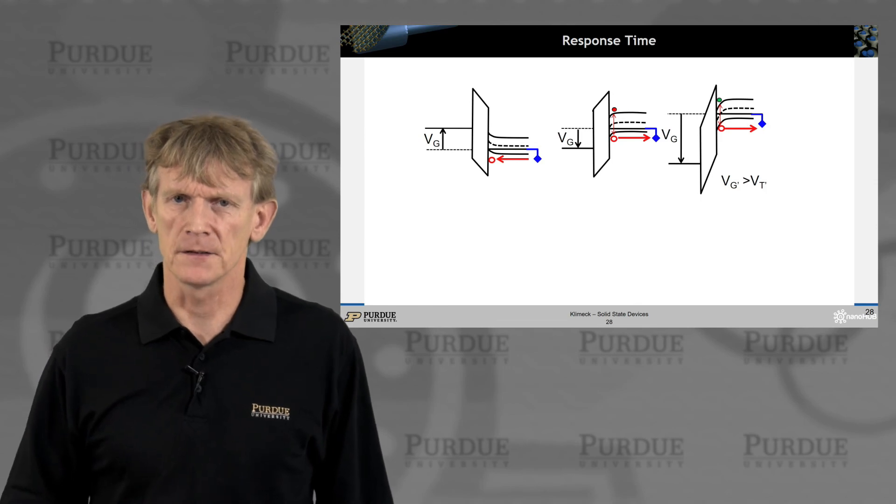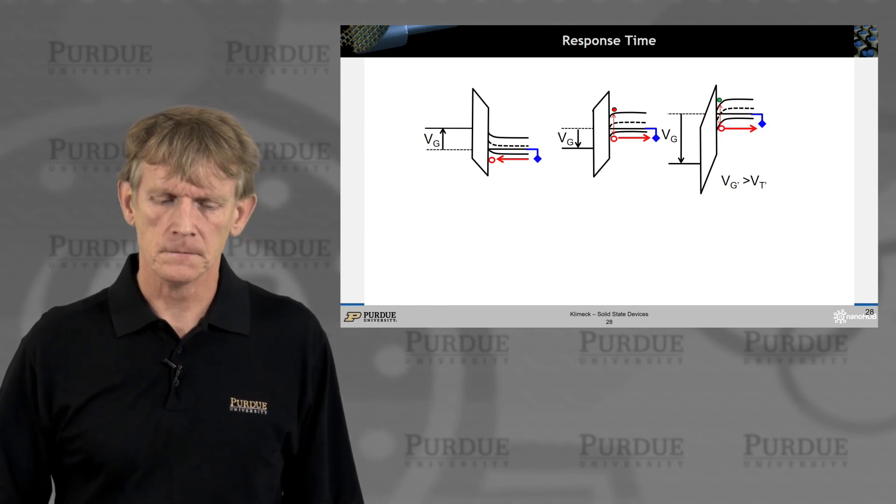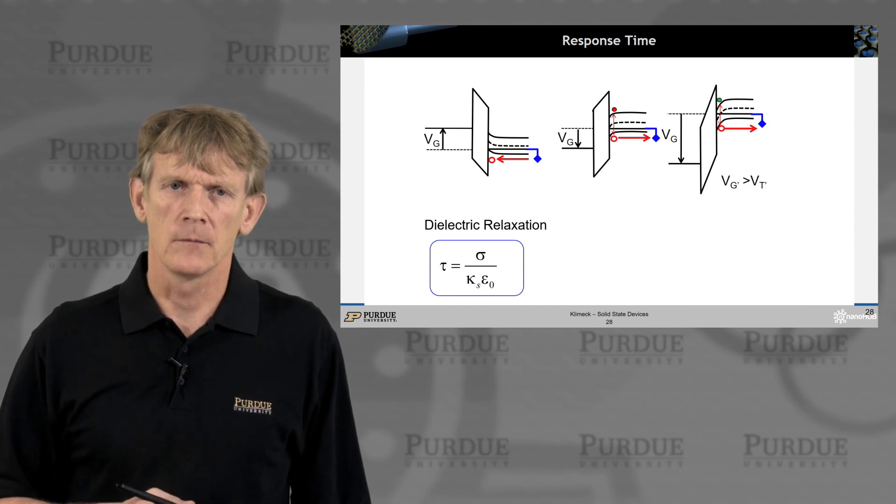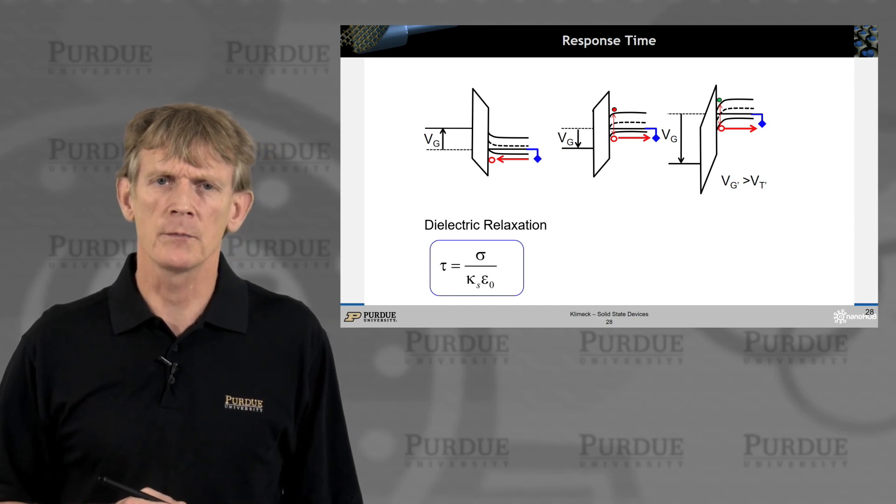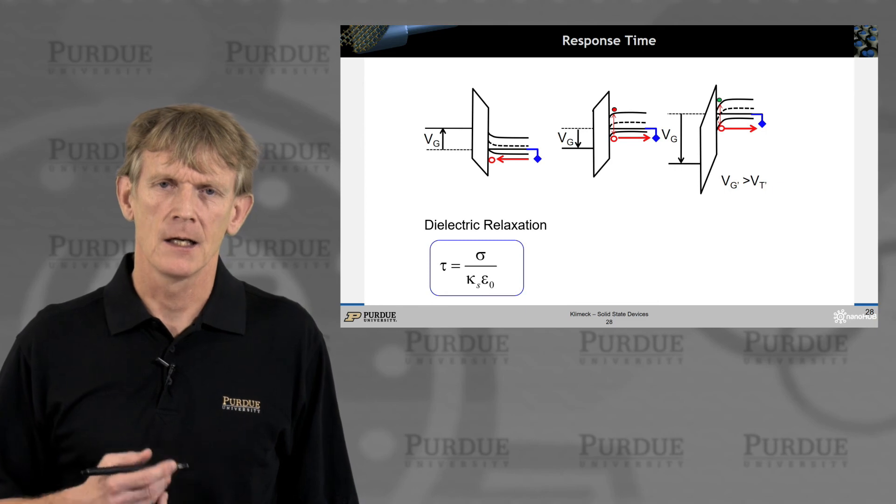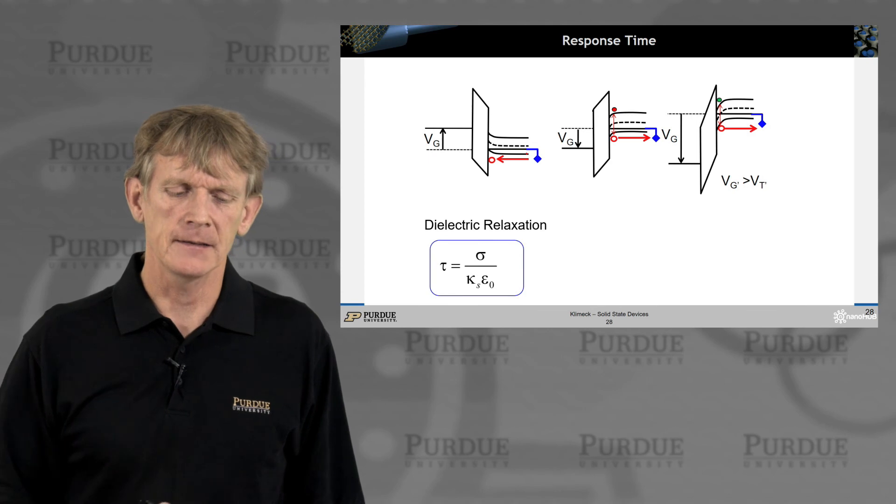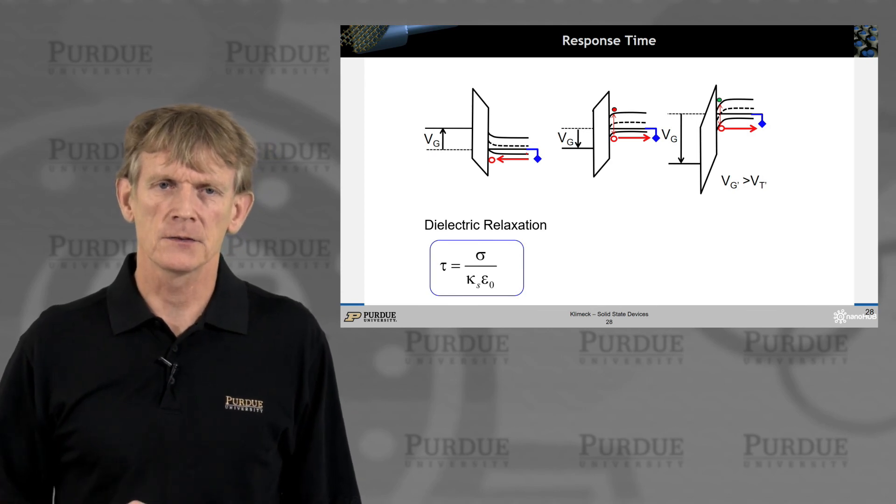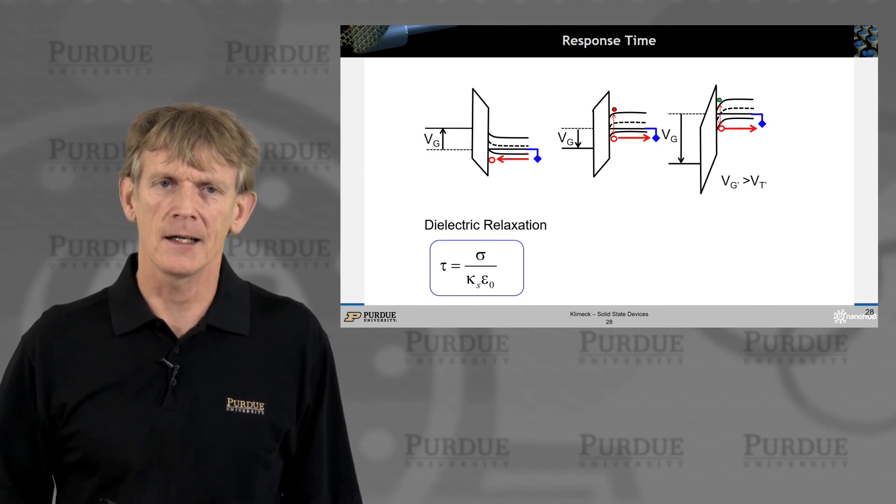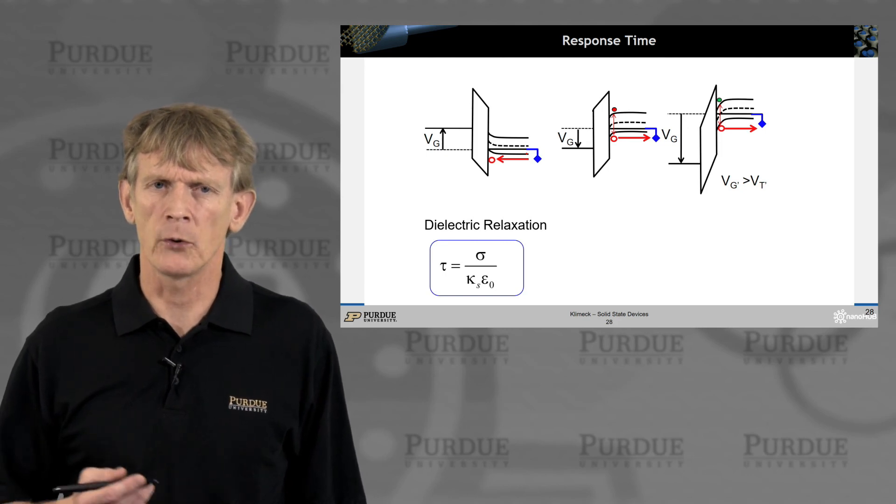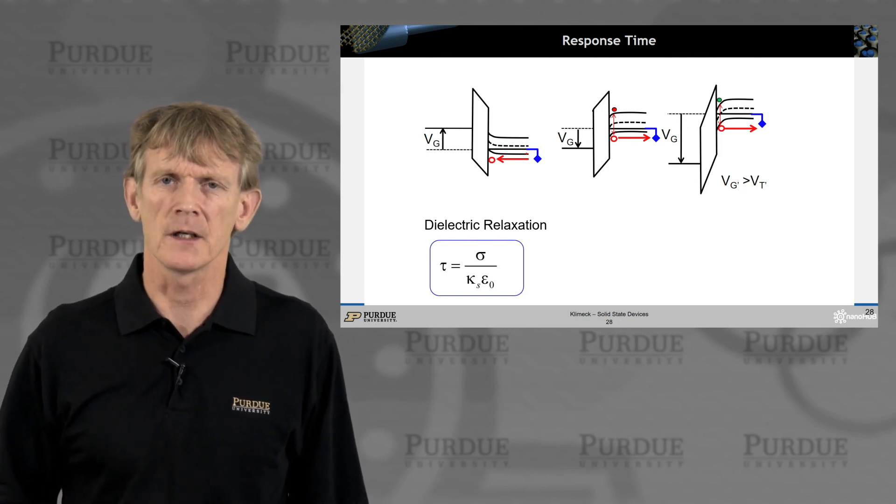All right, so how fast does this happen? Now, on the left, the accumulation is all done with majority carriers. It's a P-doped device on the right, majority carriers, conductivity is high, it's dielectric response really fast, from a 0.1 picosecond or so, really fast.